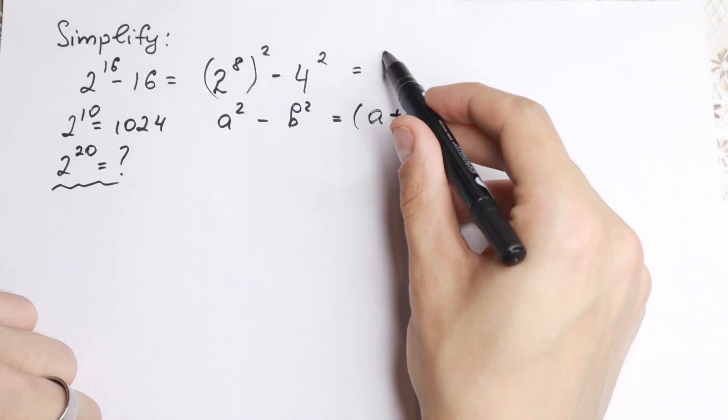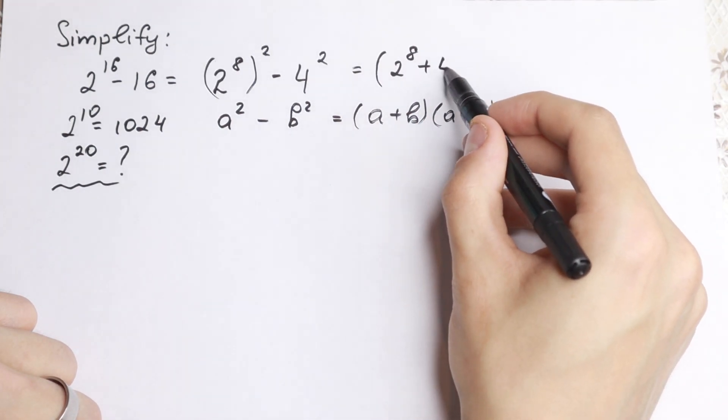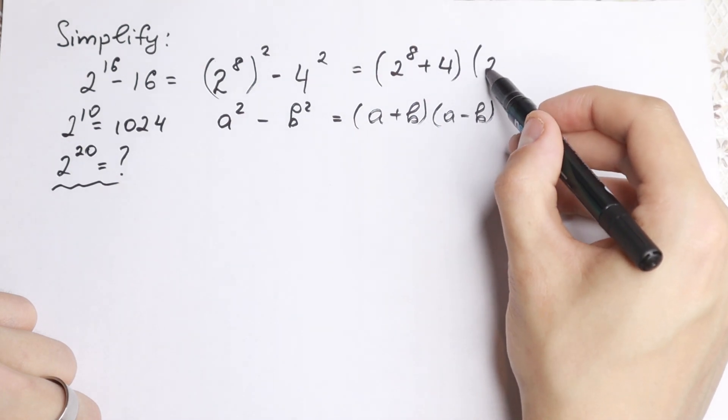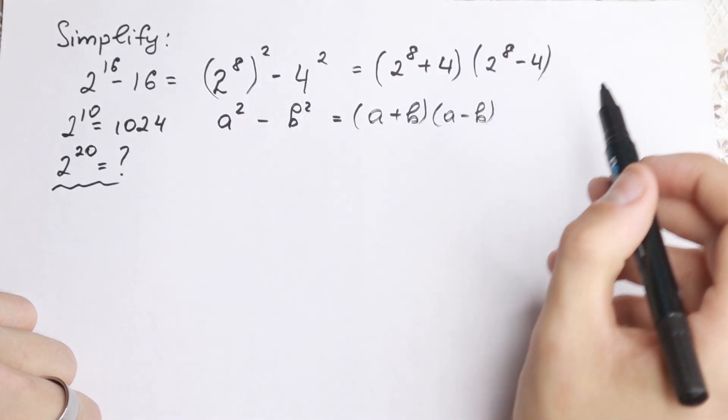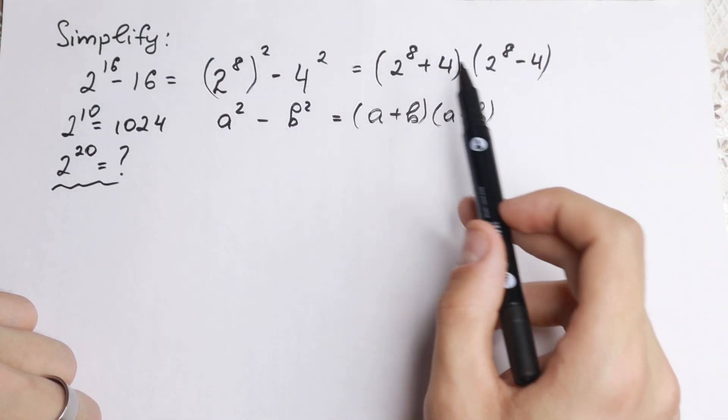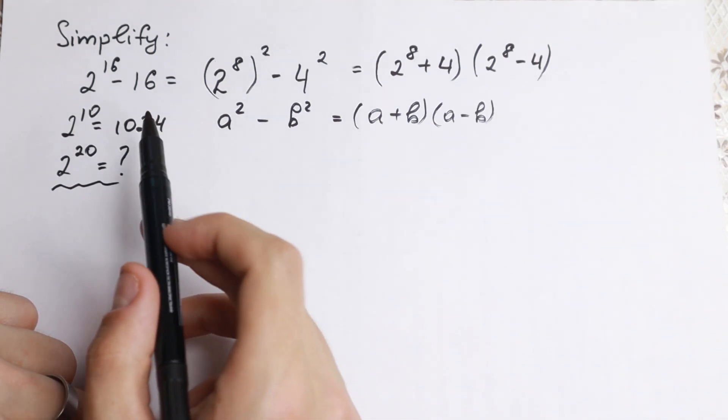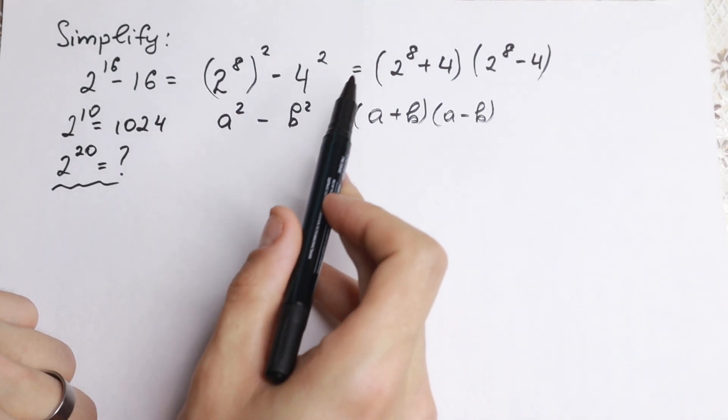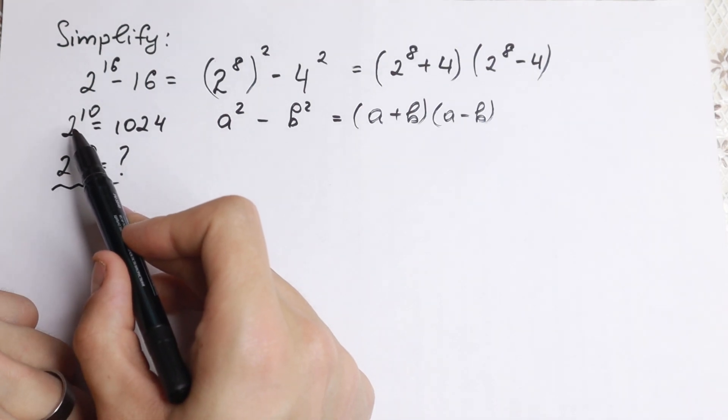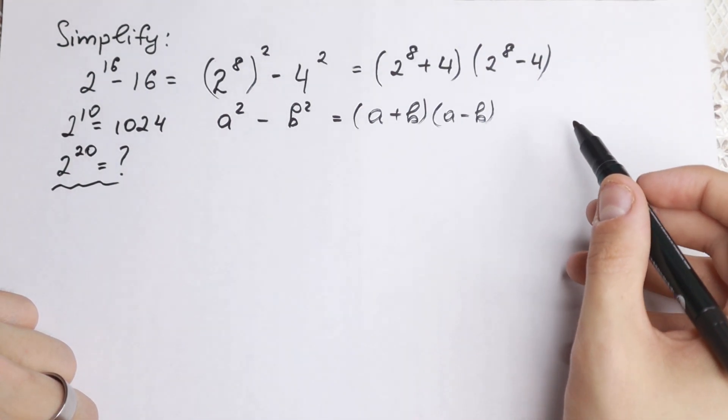So we can easily split it into an identity. Let's do this. We have 2 to the 8th plus 4 and 2 to the 8th minus 4. But what about right now? We have 2 to the 8th. Can we find exactly the value of 2 to the 8th power? Of course, because we have 1024 equals 2 to the 10th power, and 2 to the 8th power will be equal to 256.